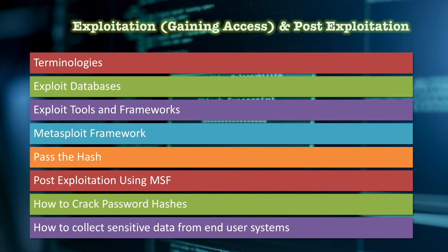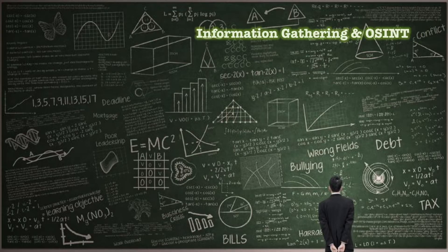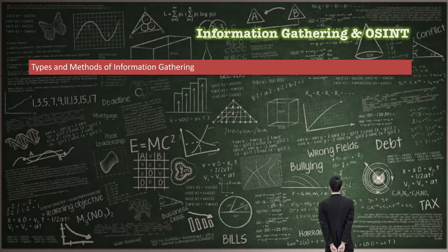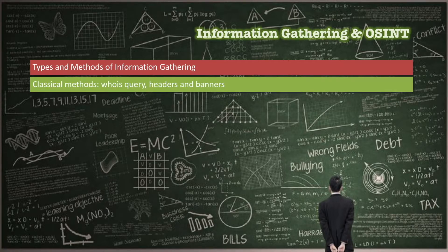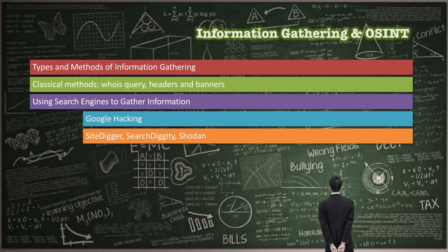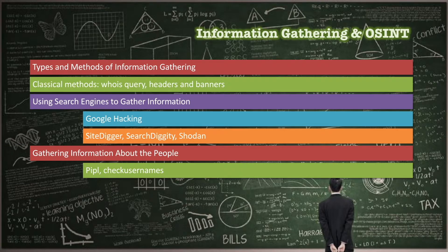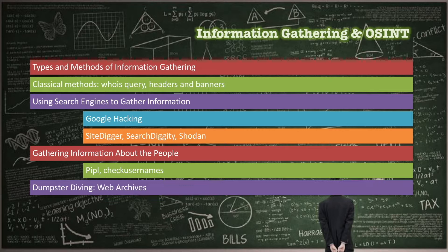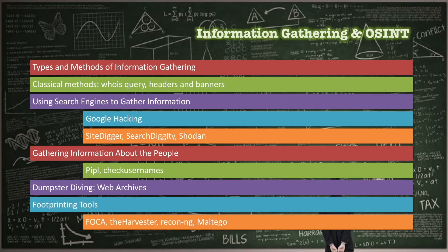The Open Source Intelligence and Information Gathering section is where you're going to learn the types and methods of information gathering, the classic information gathering methods such as Whois and Banners, how to use search engines to gather information, how to gather information about the people related to the target company, how to find more from the archives, and the tools to help you collect valuable information about the target company.